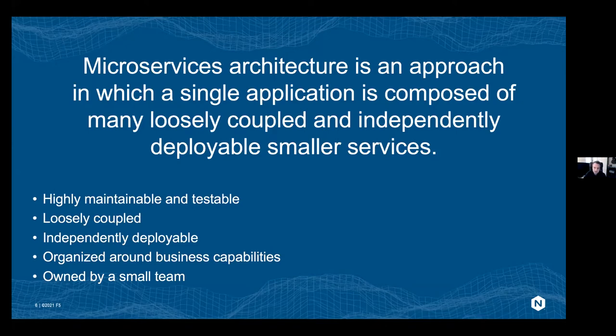Coming from F5 and NGINX, proxying solutions for these environments are changing. A traditional load balancer might now be known as an API gateway or an ingress controller in Kubernetes, or perhaps you're using a service mesh. This is why we hear terms like API management, Kubernetes, and service mesh solutions like Istio.